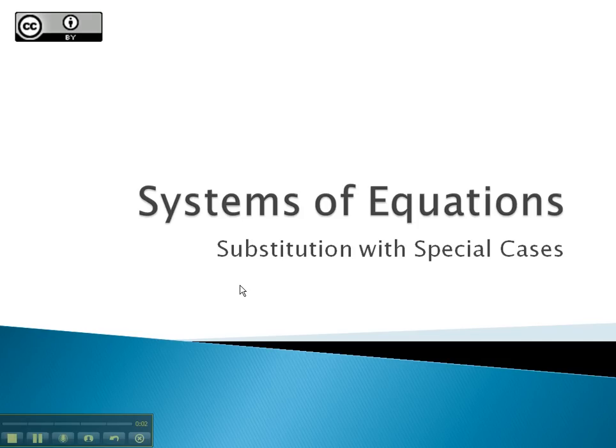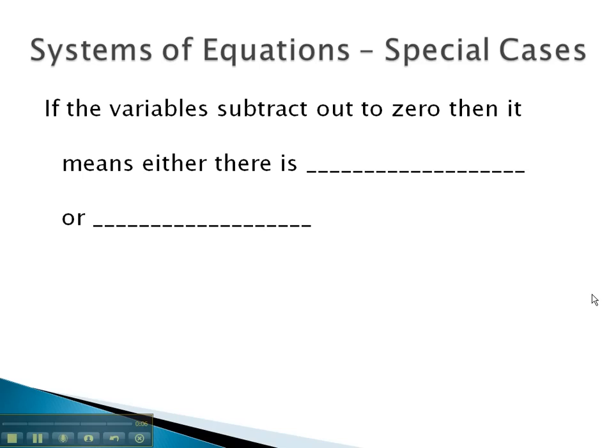There are a few special cases that might come up with solving systems of equations by substitution. As we solve, if the variables subtract out completely to zero, it means there is either no solution or there are infinite solutions that can make the system of equations true. Let's take a look at some examples and see what we can find out.